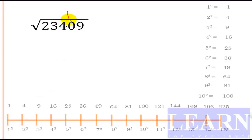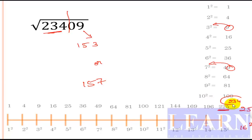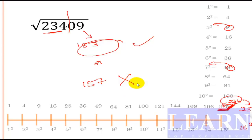The next problem is 23409. The last digit is 9, so it can end with 3 or 7. The first part is 234. We know 15 squared is 225 and 16 squared is 256, so it is greater than 15 squared — giving 153 or 157. Check: 234 is closer to 225 than to 256 (difference of about 9 vs 22), so the answer is 153.